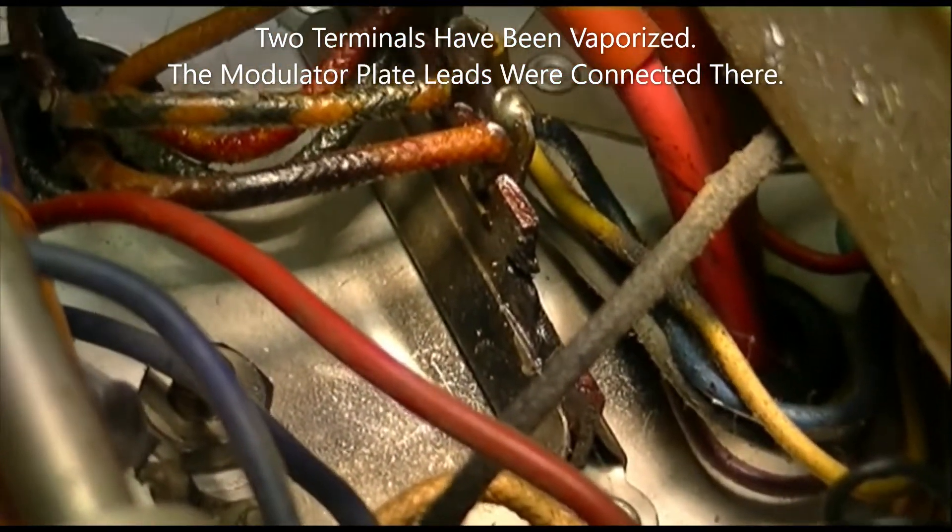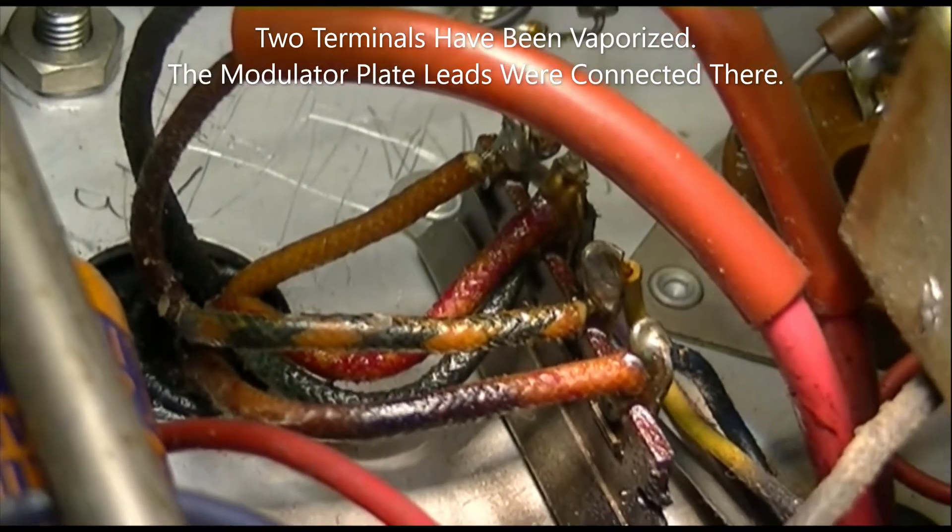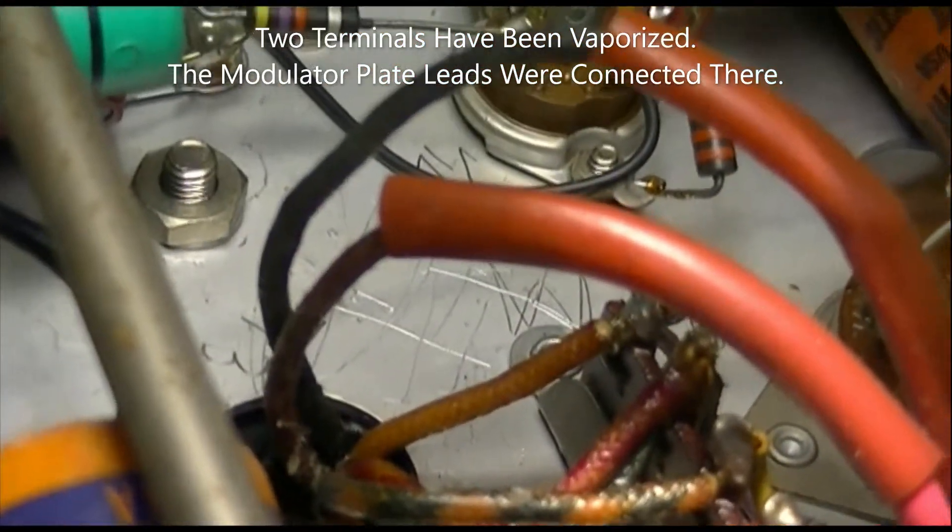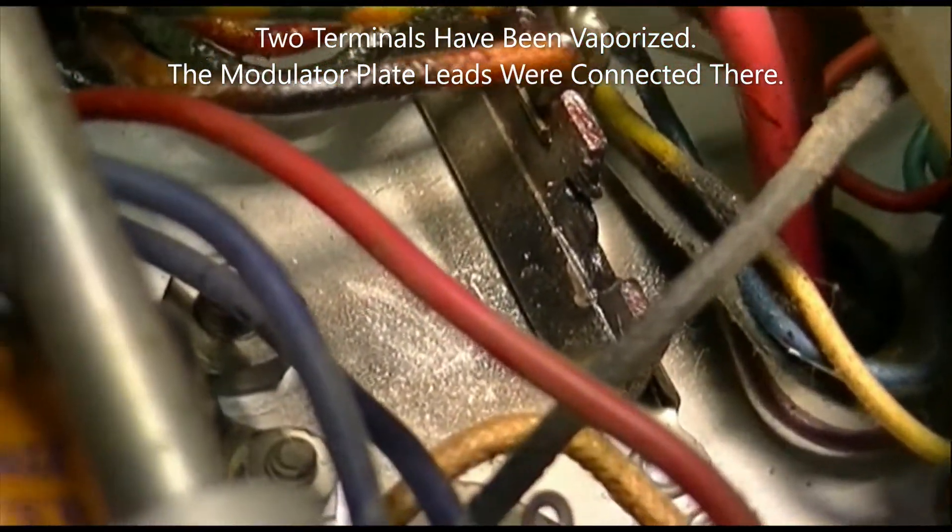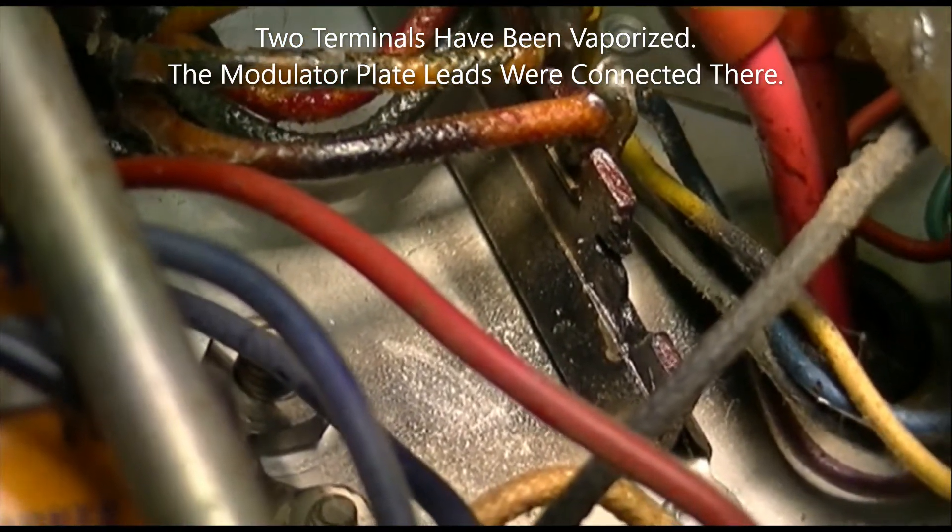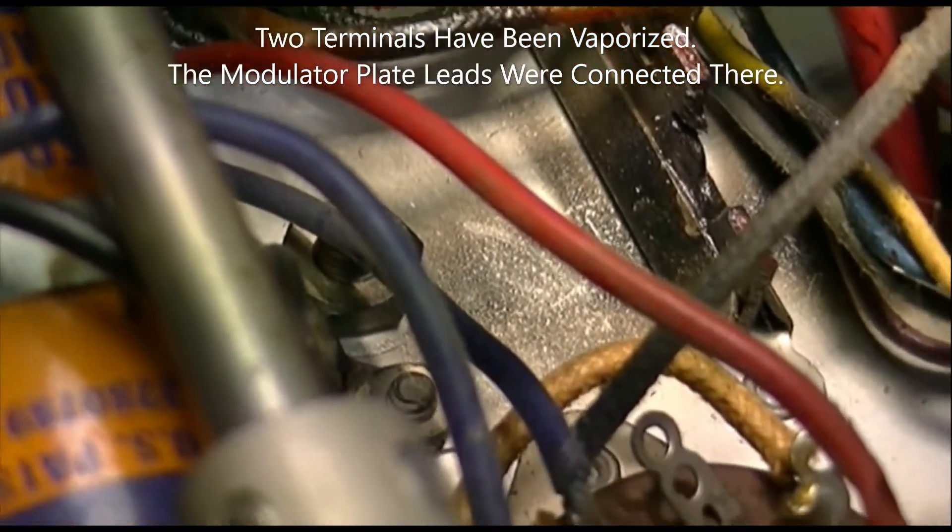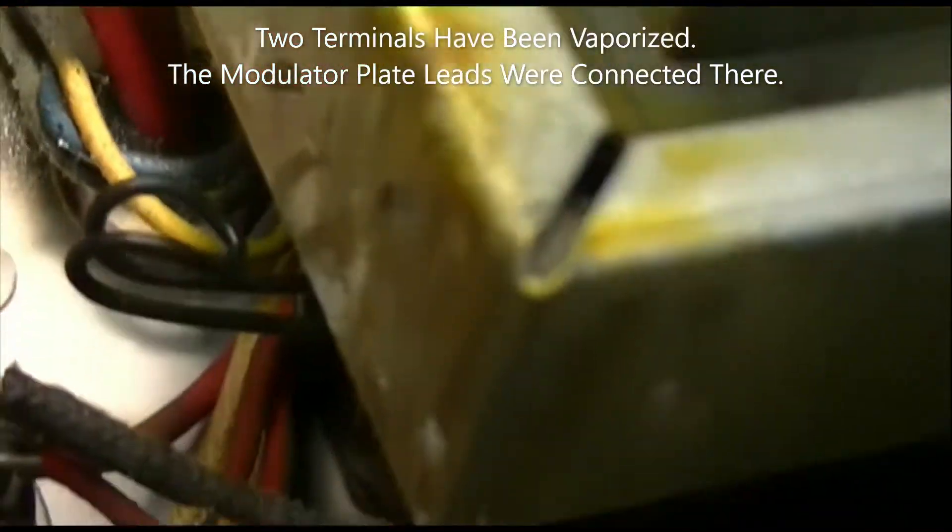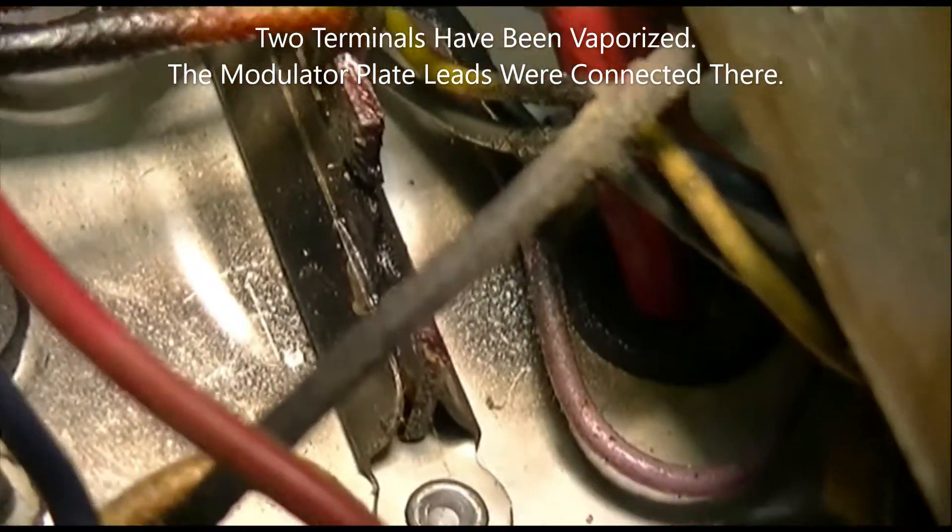I come across this terminal strip. These are the primary leads for the modulation transformer connected to this terminal strip, and those are the secondary leads that go to the plate caps of the 6146 modulator tubes. Look at this terminal strip, there's been an event here. I don't know what happened but it left a bunch of burnt residue on the chassis and on these wires next to it.